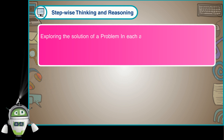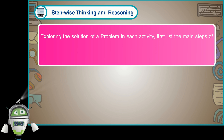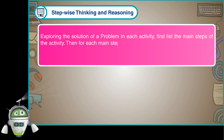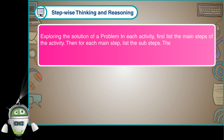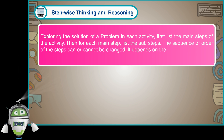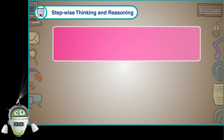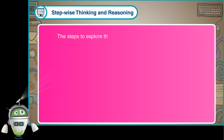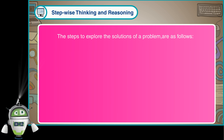In each activity, first list the main steps of the activity. Then, for each main step, list the sub-steps. The sequence or order of the steps can or cannot be changed — it depends on the activity. The steps to explore the solutions of a problem are as follows.